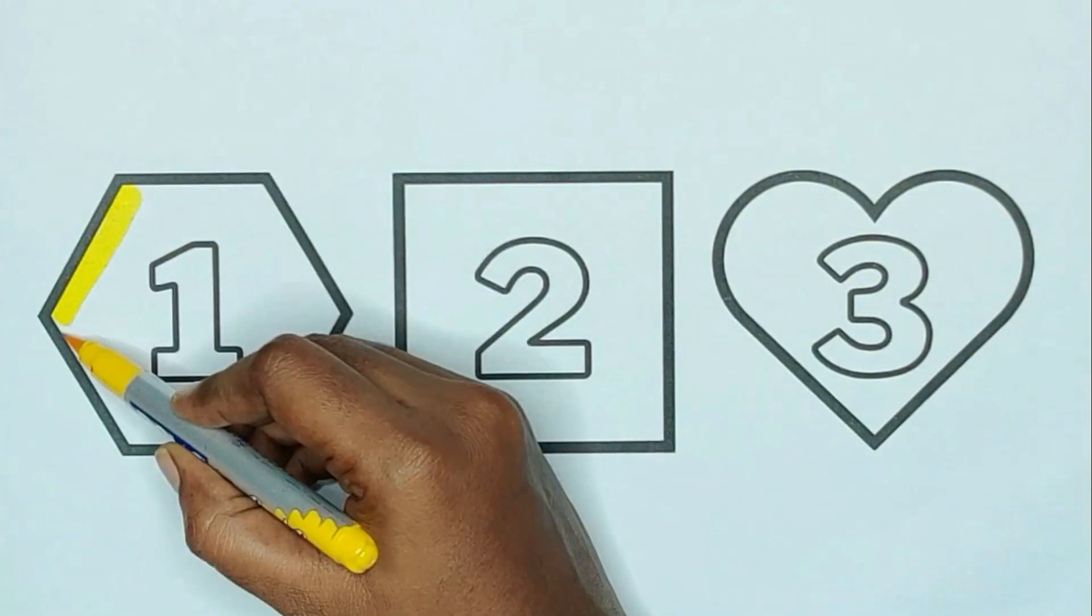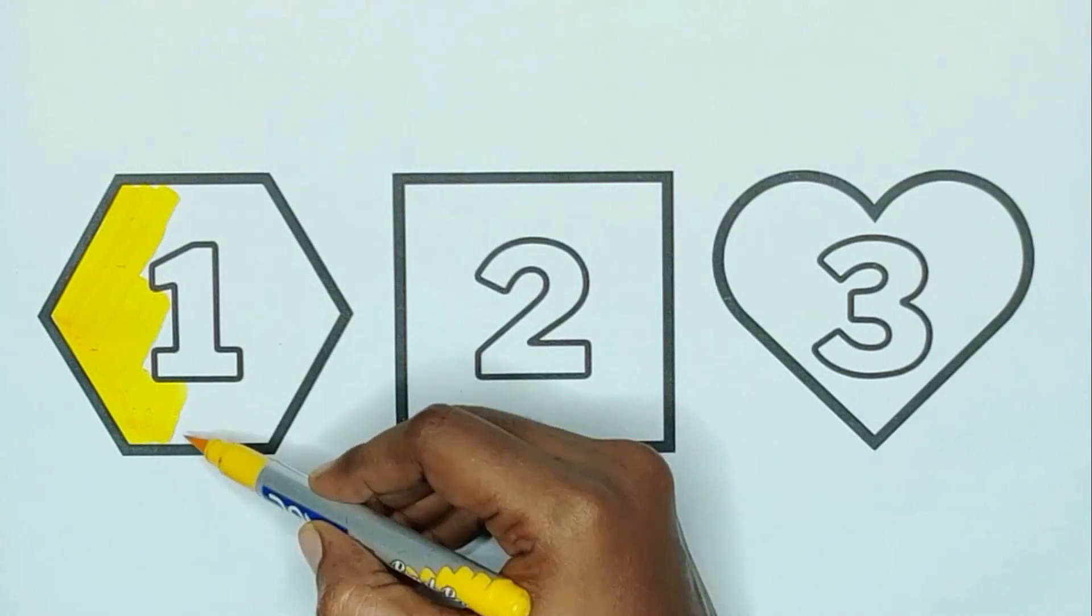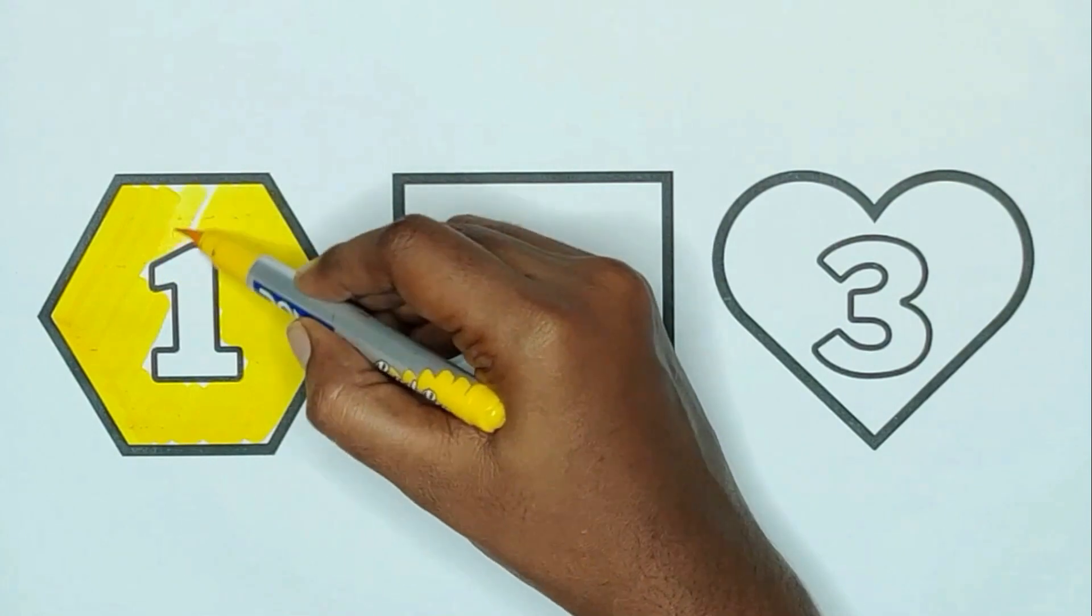Yellow color, hexagon. The shape is hexagon. Yellow color, hexagon.